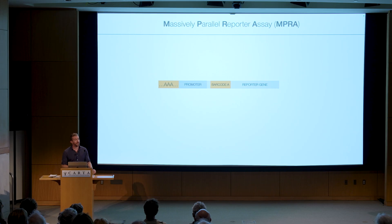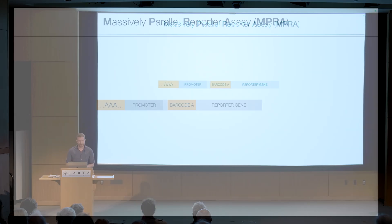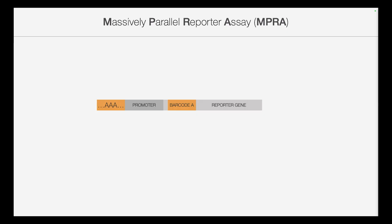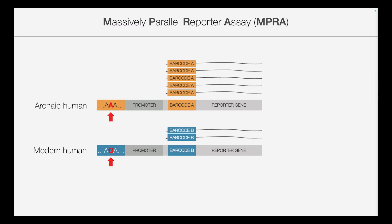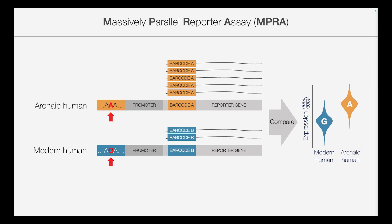Luckily, there's a method that can interrogate the functional effect of thousands of genetic variants in parallel. In massively parallel reporter assays, or MPRAs, a synthesized sequence is inserted upstream of a minimal promoter. If this sequence has a regulatory effect, it will activate the downstream gene, which we can measure by sequencing its bar-coded RNA. If we synthesize a construct with the archaic human version and a modern human version that differ in a single nucleotide change, we can compare expression between them and identify regulatory variants that affect gene expression.